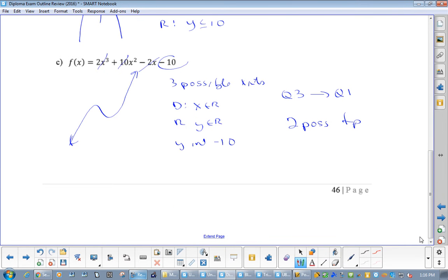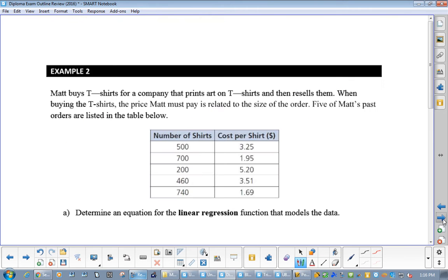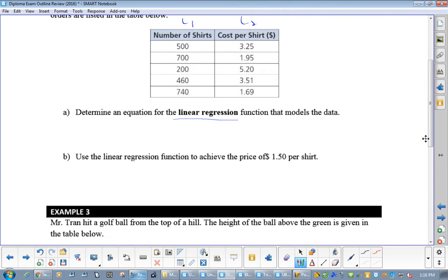These we worked with yesterday. This is just an L1, L2, and linear regression. All you're going to do is put that in. We talked about this yesterday already. You'll get y = -2.06x + 6.5. It's your stat plot. Make sure it was on. Now it says use linear regression to achieve the price of $1.50 per shirt, because they're showing you the more shirts you buy, the cheaper you can get them for. Is that the y or the x? So then how would you find it in your calculator?